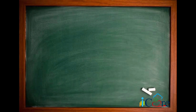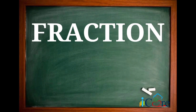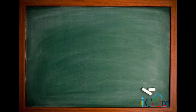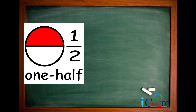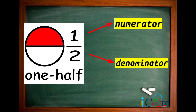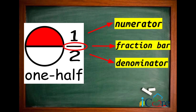Let's first define fraction. Fraction is a part of a whole. It is composed of a numerator, which is the number of parts we have, and the denominator, which is the total parts of a whole. The numerator and the denominator are separated by a line called the fraction bar.